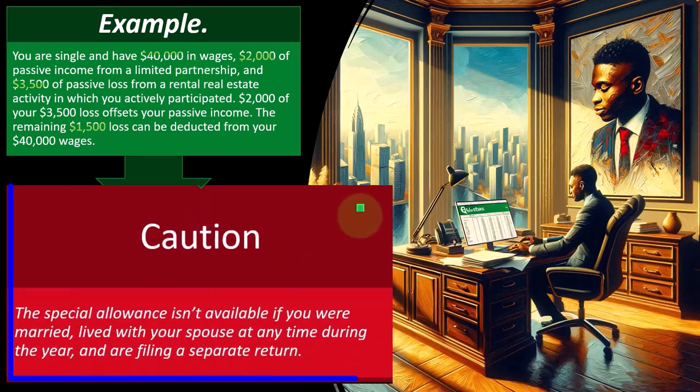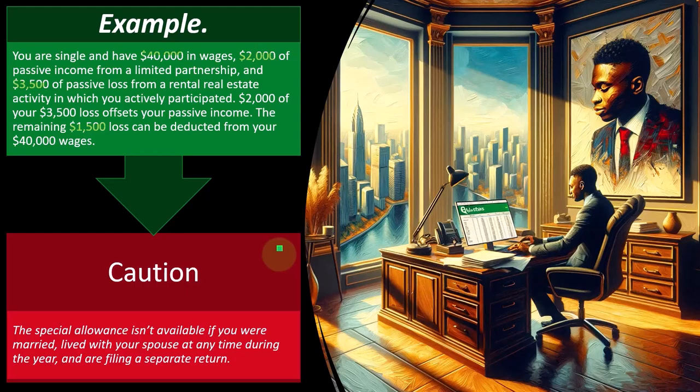Caution: The special allowance isn't available if you were married, lived with your spouse at any time during the year, and filed a separate return. Married filing jointly is usually better. If you file married filing separately, the IRS is skeptical because you might take advantage of income phase-outs by having lower separate income levels that would allow deductions that wouldn't be allowed on a joint return.